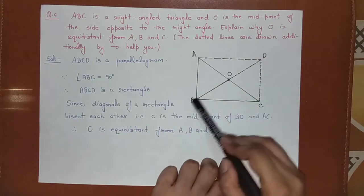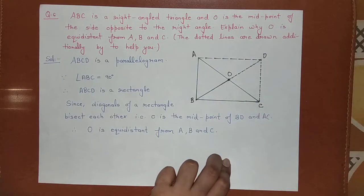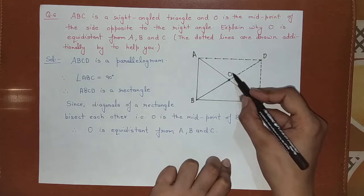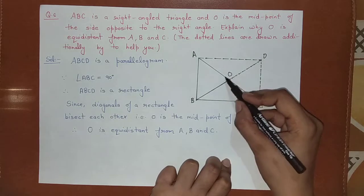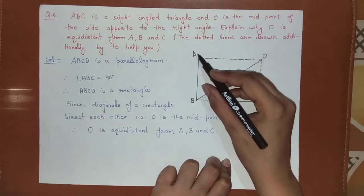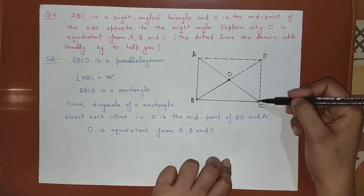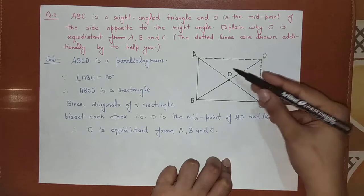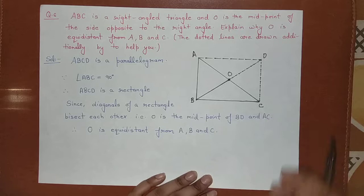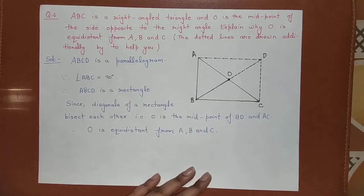O is the midpoint of BD and AC. BD and AC are the two diagonals, and O is the common bisection point. Therefore, O is equidistant from B and D, and equidistant from A and C. This means O is equidistant from A, B, and C.